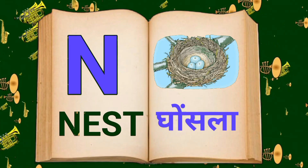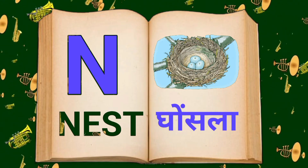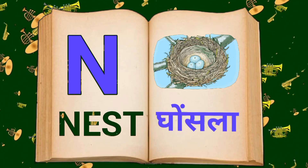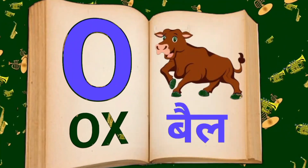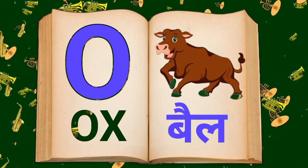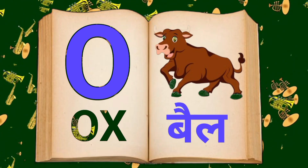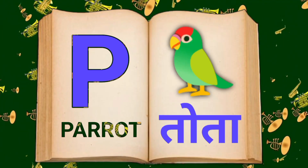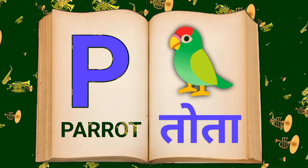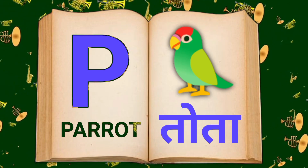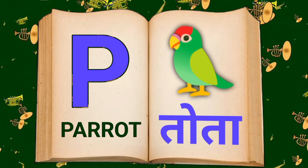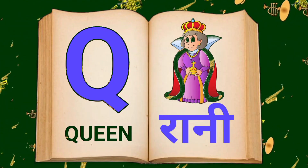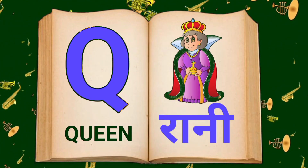N for Nest, Nest means ghosla. O for Ox, Ox means bail. P for Parrot, Parrot means tota.